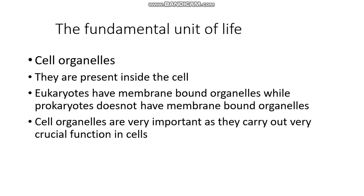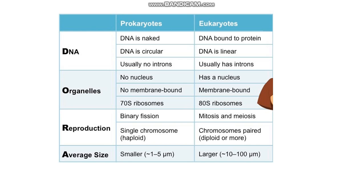Now let's go through some of the major differences between eukaryotes and prokaryotes. In prokaryotes, DNA is circular; in eukaryotes, it's linear. Prokaryotes have no introns; eukaryotes usually have introns. Prokaryotes have no nucleus and use 70S ribosomes; reproduction in prokaryotes is by binary fission. Prokaryotes are a primitive version of organisms while eukaryotes are much more advanced, having a nucleus and membrane-bound organelles. In prokaryotes there is no such membrane, and prokaryotes are smaller in size compared to eukaryotes.